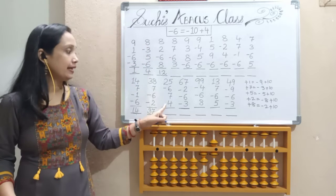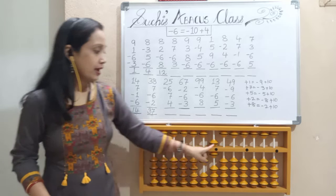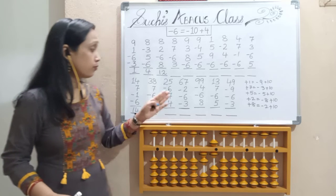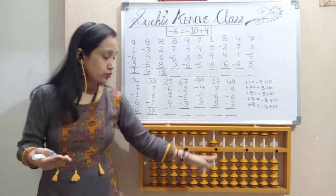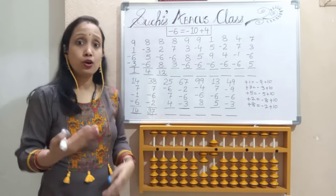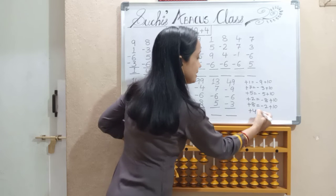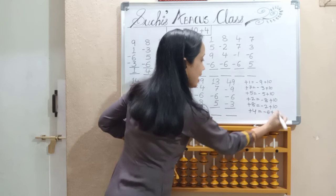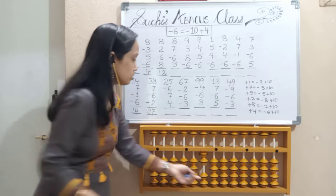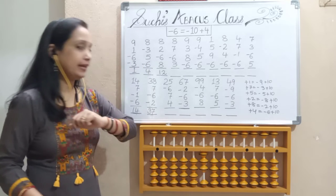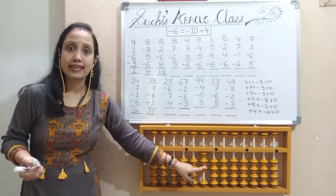Next, add 4. I need 4, but I don't have — I have only 1. Formula for 4: 4's friend is 6, so less 6, add 10. This 6 will go out and 10 will come in. So our answer: 10, 20, 30.